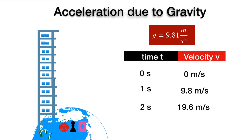After 2 seconds, the velocity will be 19.6 meters per second. From 0 to 1 second it increased by 9.8 m/s, and in the next second it increased another 9.8 m/s, so 9.8 plus 9.8 is 19.6 meters per second. You can now predict what the speed of the object will be after three seconds — it follows the same pattern of increasing by 9.8 m/s each second.